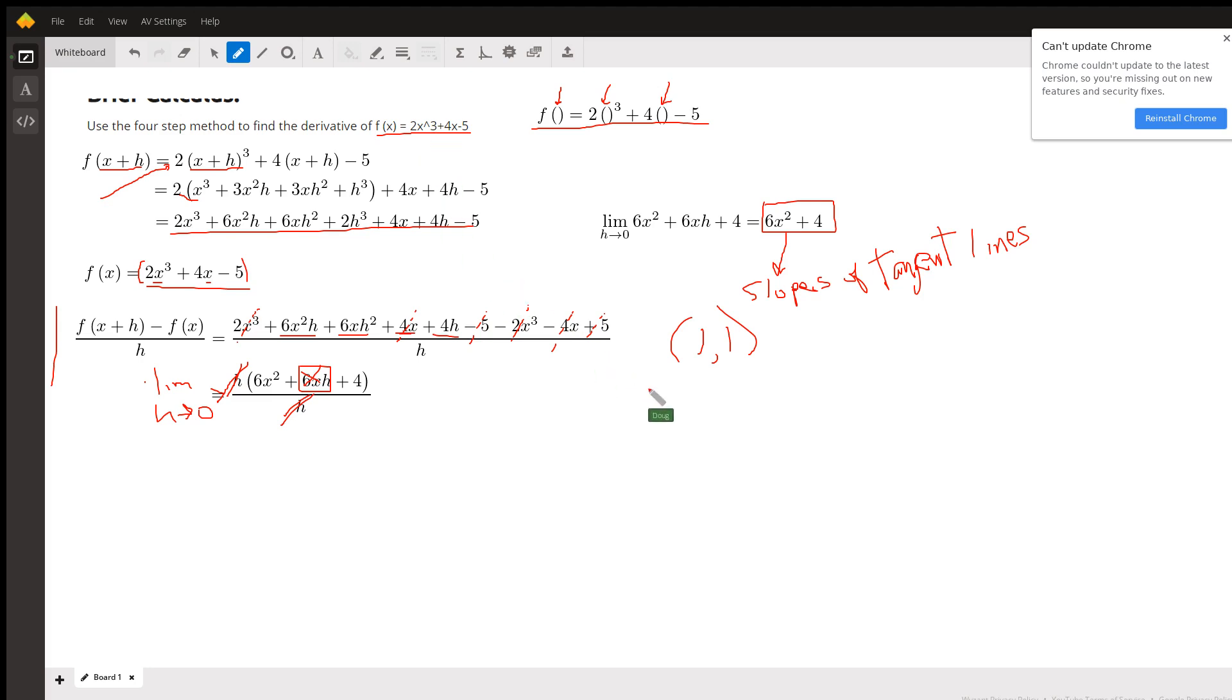What's the slope of the tangent line at the point where x is 1? I put 1 in here. We say f prime of 1 is equal to 10.